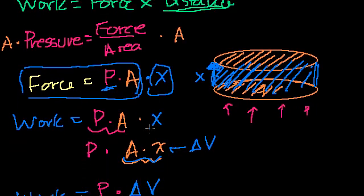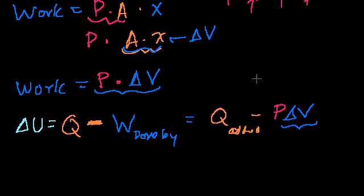We could rewrite that as pressure times area times distance, and area times distance is the change in volume. So we came up with the formulation that the work done by a system is pressure times the change in volume. In the internal energy formula, this appears with a minus sign because when you do work, you are giving energy away. So instead of writing work, we write minus pressure times the change in volume. Remember, this is a quasi-static process.